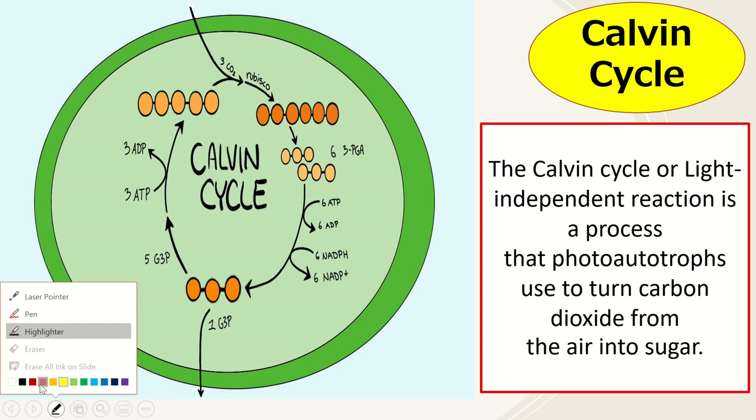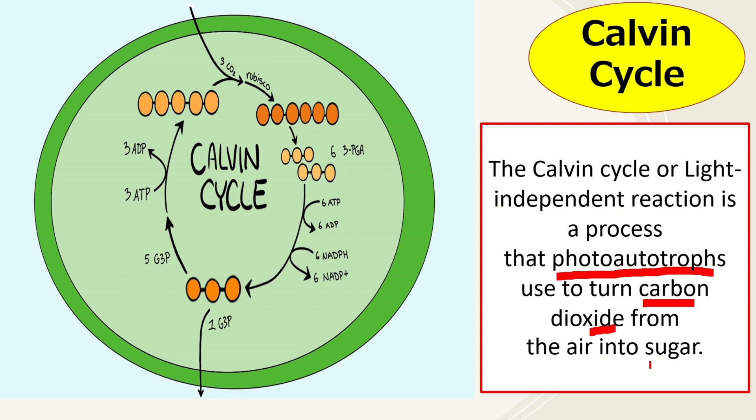This is the process that photoautotrophs use to turn carbon dioxide into sugar or glucose. So the main function of the Calvin Cycle is to create the glucose, which is the energy source of the plants in order for them to grow.